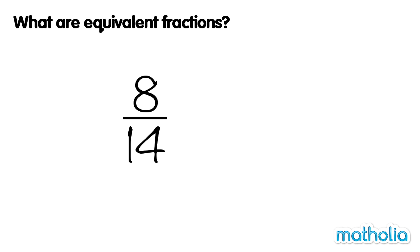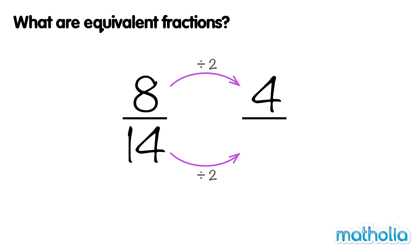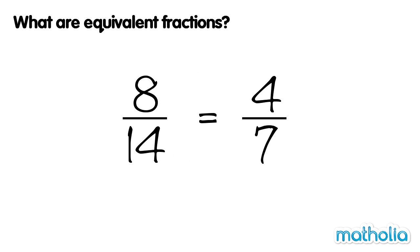We can also find equivalent fractions by dividing the numerator and denominator by a given number. In the fraction eight fourteenths, both the numerator and the denominator are even numbers, which means they can be divided by two. Eight divided by two equals four. Fourteen divided by two equals seven. Eight fourteenths and four sevenths are equal. They are equivalent fractions.